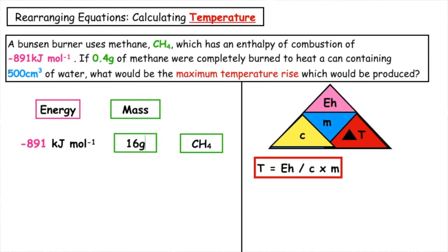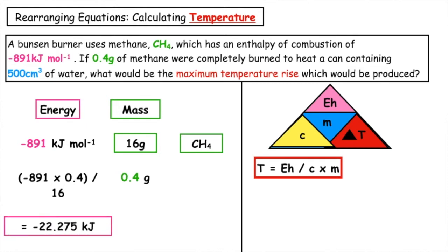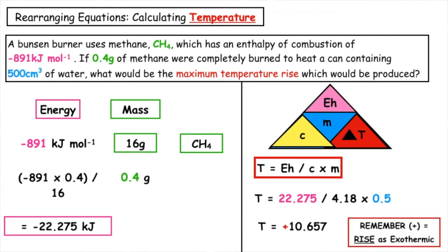In the question, however, we don't have 16 grams — what we have is 0.4 grams. So we cross multiply: 891 times 0.4 divided by 16 gives us 22.275 kilojoules of energy released. We then insert our information into our formula: T is equal to 22.275 divided by 4.18 times 0.5, and that gives us a temperature rise of 10.657.